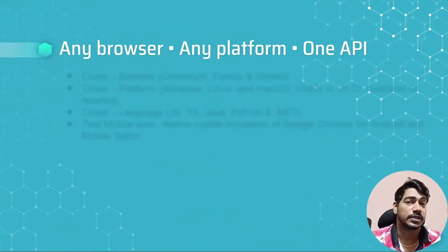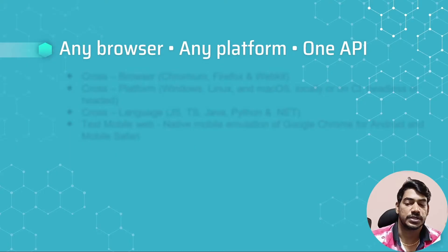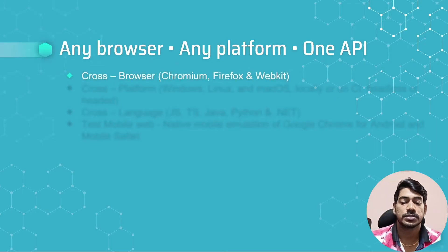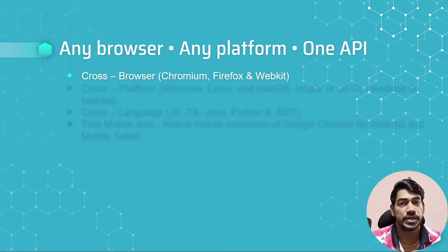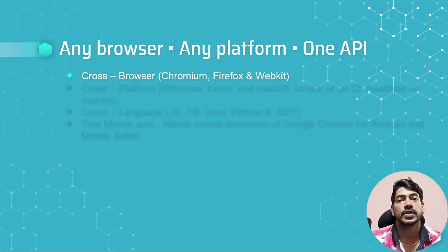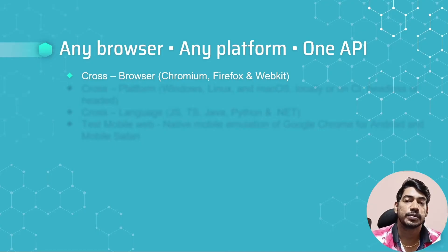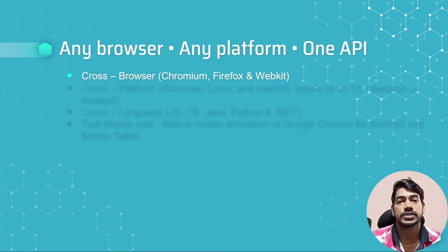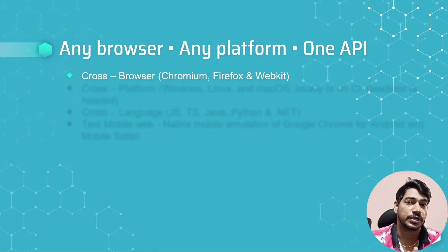Let's discuss why we should learn Playwright and its advantages compared to other frameworks. It's built for cross-browser testing, so we can run on any browser and any platform using one API — Chromium, Firefox, and WebKit. Playwright comes with bundled browsers. The bundled Chromium engine may be at version 115, while the Chrome browser installed on your machine may be at 114, meaning you are testing ahead of the actual browser release.